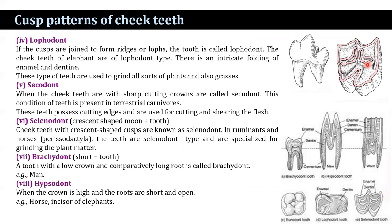In the brachydont type, the tooth has a short crown and comparatively long root. In hypsodont teeth, the crown is high. In brachydont, the crown is low and the root is long, whereas in hypsodont, the crown is high and the roots are very short and open. Hypsodont teeth are found in horses and the incisors of elephants, whereas brachydont teeth are found in humans.